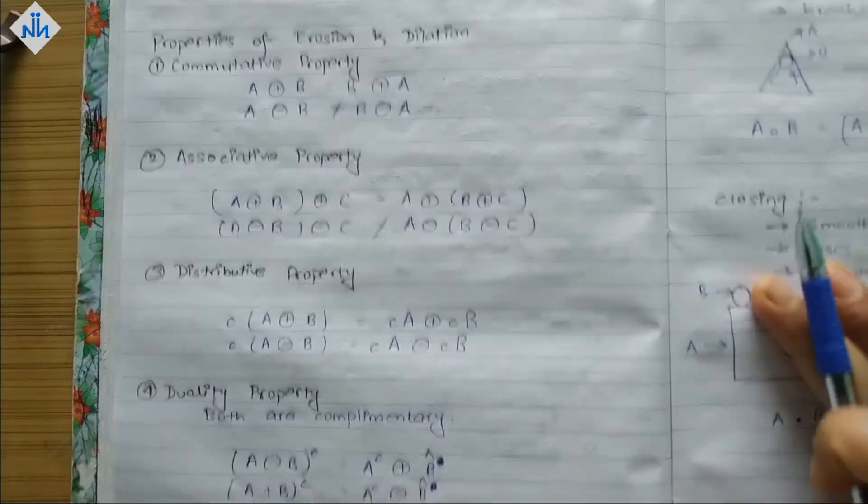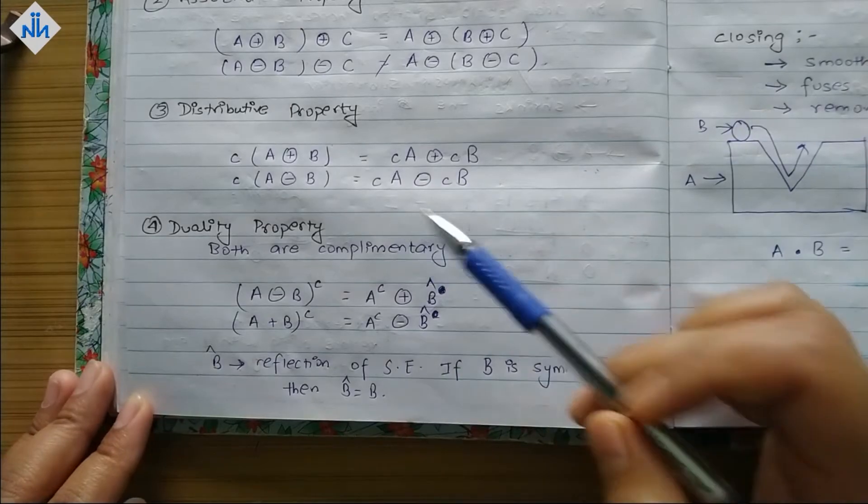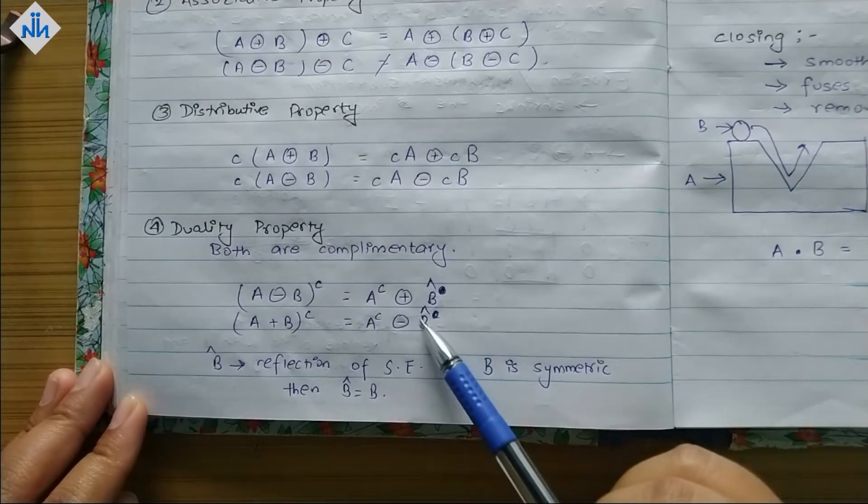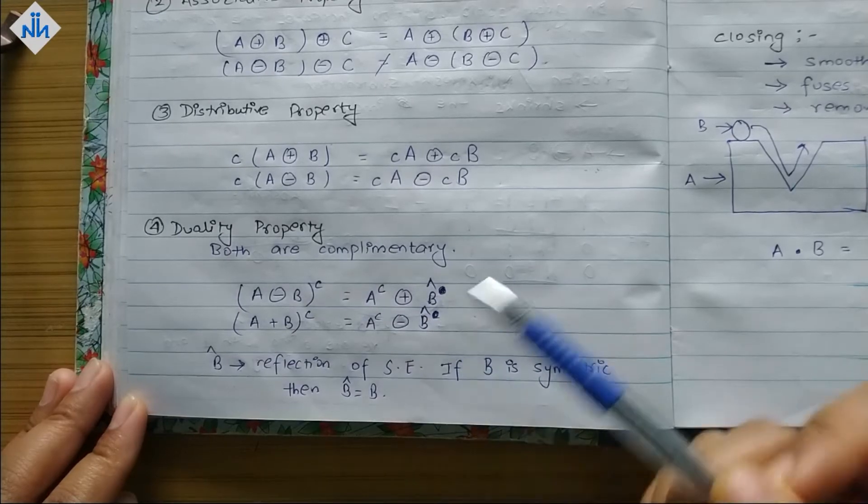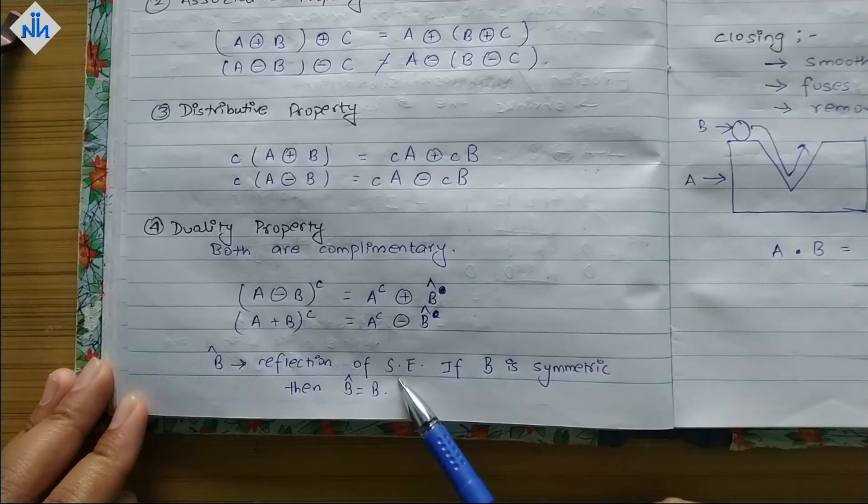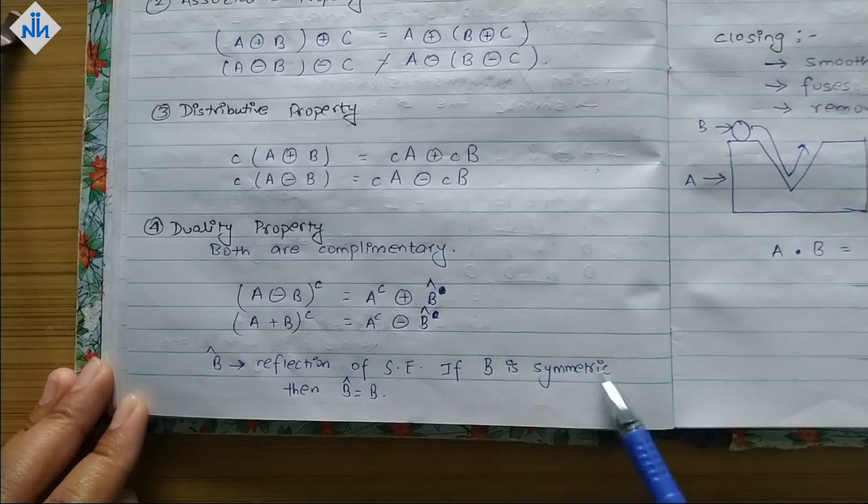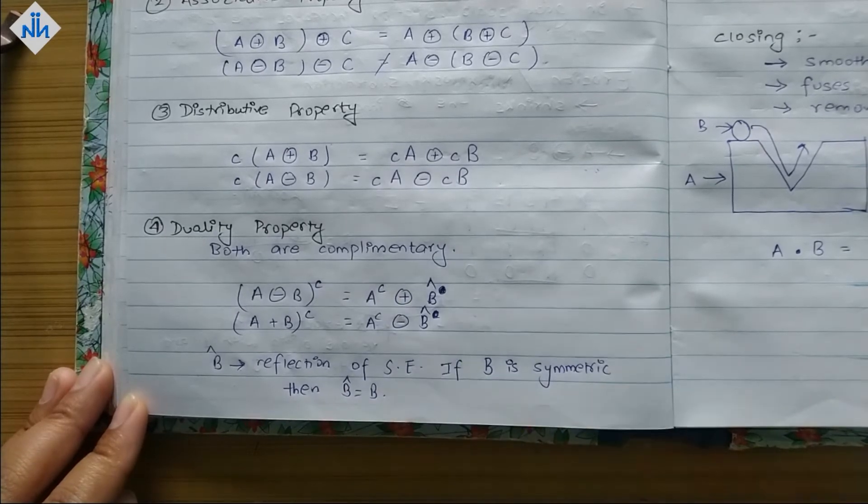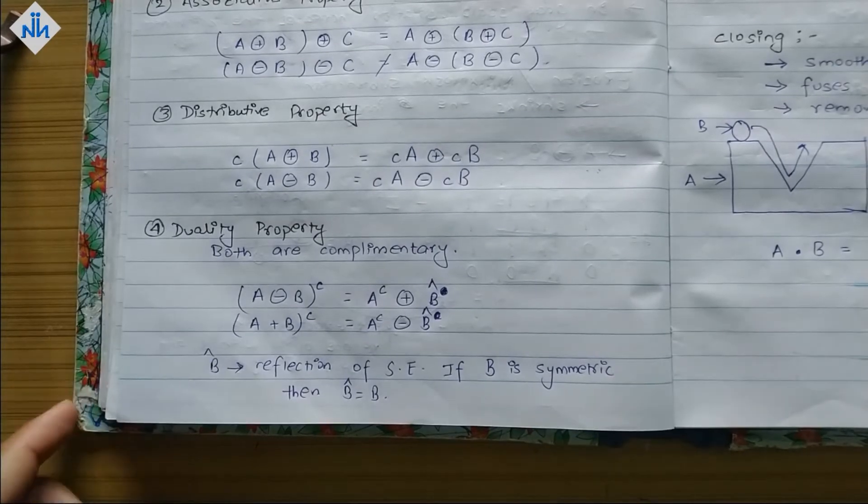Distributive property. It holds for both. Duality property. That means both are complementary. It holds for both. And here B reflection means it is reflection of the structuring element. If B is symmetric then B reflection is equal to B. So that is something that you have to note in duality property.